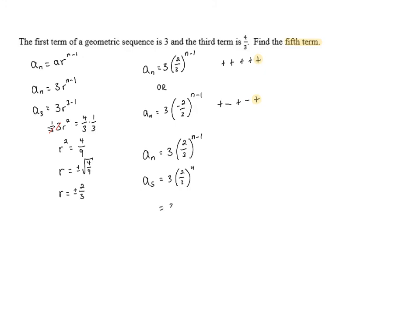And so this becomes 3·(2/3)^4, which is going to be 16/81 because 2^4 is 16 and 3^4 is 81. And we can reduce the 3 and the 81 by 3. If we cancel out that 3 in the 81, that leaves us with 27. And so we're left with 16/27 for our fifth term, which is our final answer.